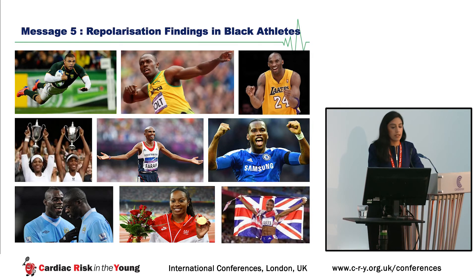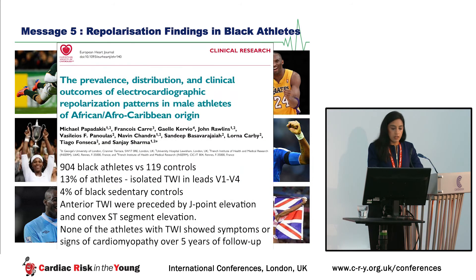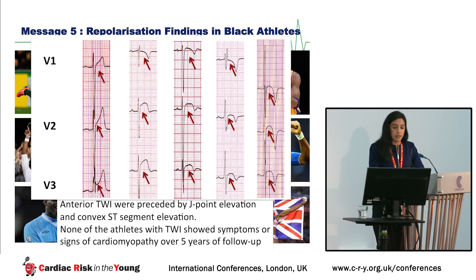What about repolarization changes in black athletes? Over the past decade, ethnicity has been recognized as a major determinant of cardiac adaptation to exercise, and black athletes exhibit a higher prevalence of ECG anomalies including repolarization changes. In a study by Dr. Papadakis, 904 black athletes were assessed, demonstrating that 13% had J-point elevation and convex ST segments followed by T-wave inversion. To the novice, these patterns could be mistaken for anterior myocardial infarction, Brugada phenotype, or ARVC — which is why education in this area is so important.